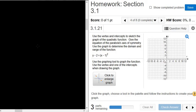Use the vertex and intercepts to sketch the graph of the quadratic function. So we have y minus 2 equals (x minus 1) squared. So the first thing to do maybe is to find the vertex. To do that, we'll put this in standard form.